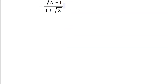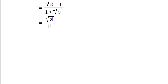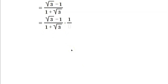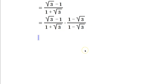This is a form of the answer, though it's often not the one shown. We can simplify further. Write root 3 minus 1 over 1 plus root 3, and multiply by the conjugate of the denominator: 1 minus root 3 over 1 minus root 3.